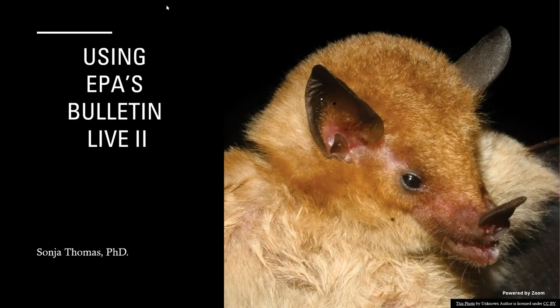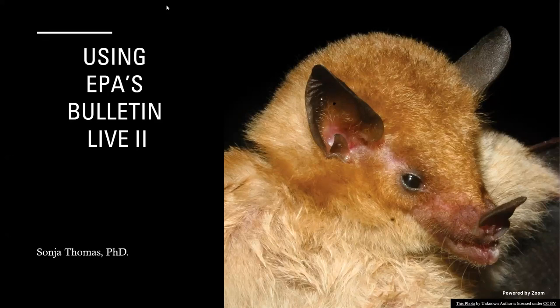Good morning. Today's presentation is about EPA's Bulletin Live 2. Oftentimes when you have a label, you might see on the label where it says 'consult the county bulletin' or 'look for the bulletin for endangered species.' Because of changes and updates in chemicals and the declaration of new endangered species, EPA decided to update the Bulletin Live 2 to make it all online.